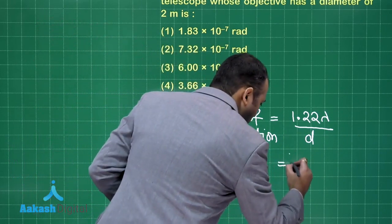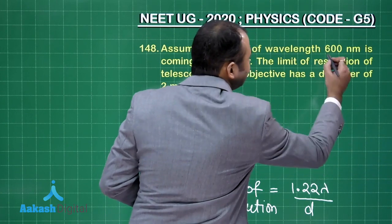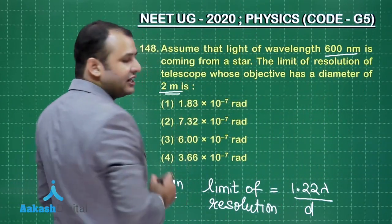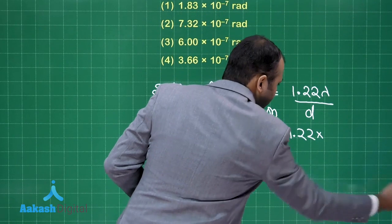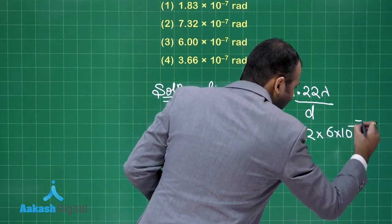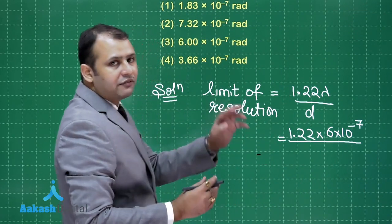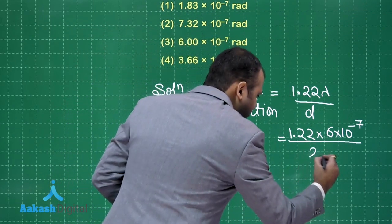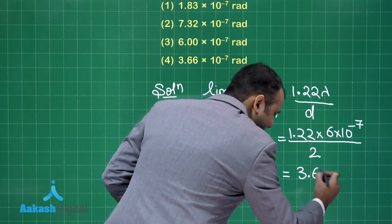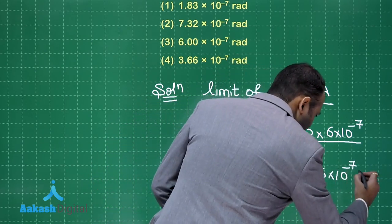So it is 1.22. The wavelength is 600 nanometers, and the diameter is given as 2 meters. We write the wavelength as 6 into 10 to the power minus 7, converting nanometers into meters. Solving this, we get 3.66 into 10 to the power minus 7 meters per radian.